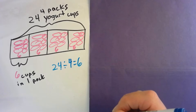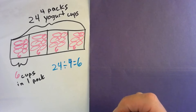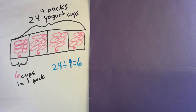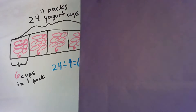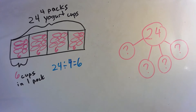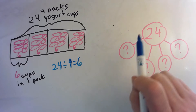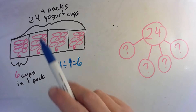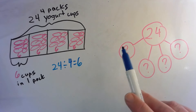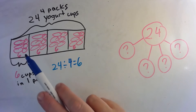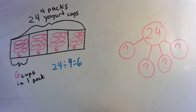Now let's draw a number bond that represents this problem. Here's our number bond — we have our whole, which is 24, the total amount. We know we have four packs, meaning four groups, just like we had four groups in our diagram. The number bond represents the division equation we wrote to solve this problem.